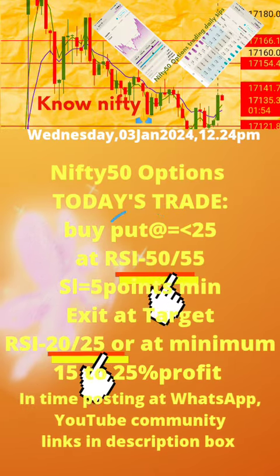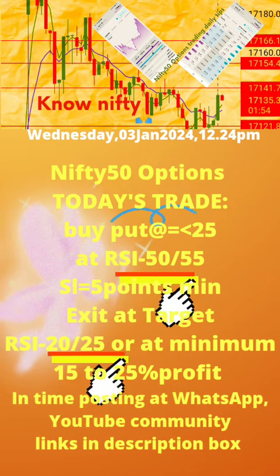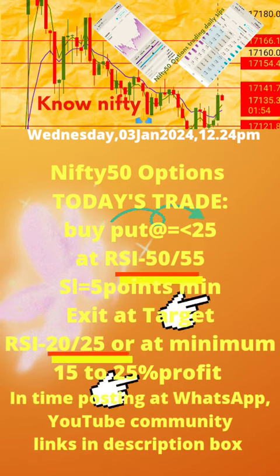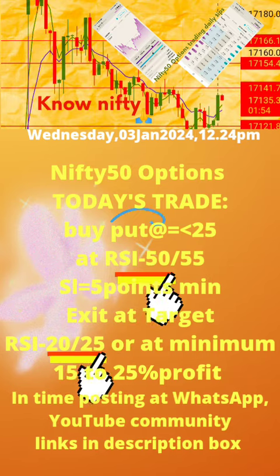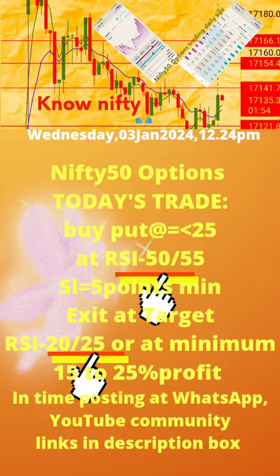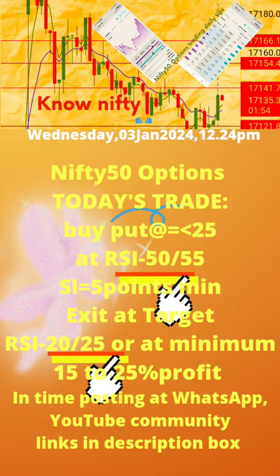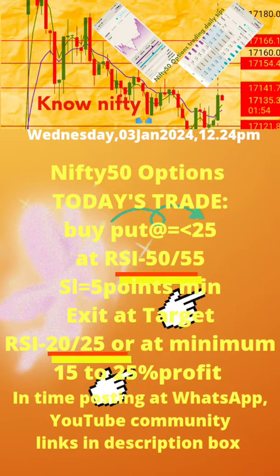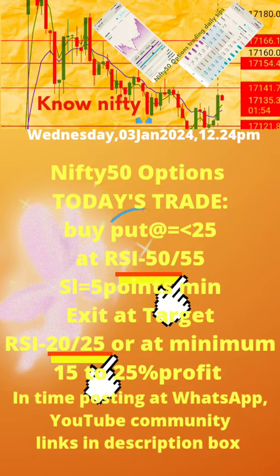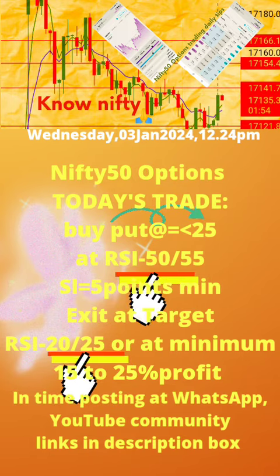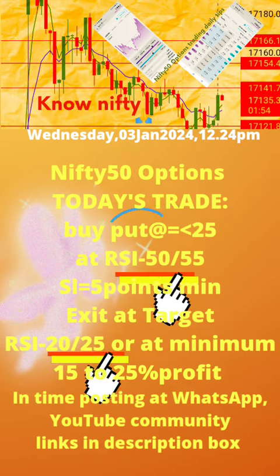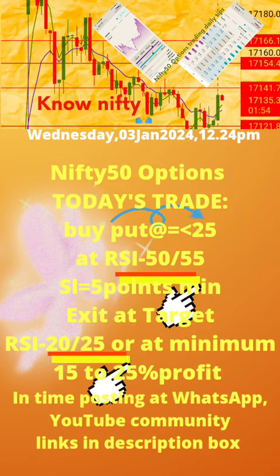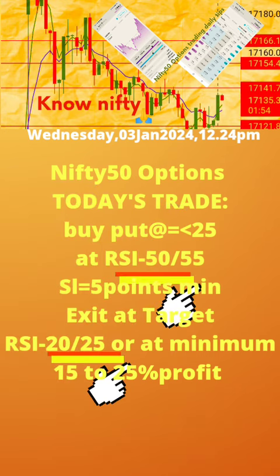Please note: 1. Today's time of post is also mentioned. 2. Buy put or call at strike price with premium value equal to or less than 25, at RSI value updated daily. 3. Apply stop loss of minimum 5 points. 4. Exit at target RSI value updated daily. Now take today's trade as per the updates in this page.